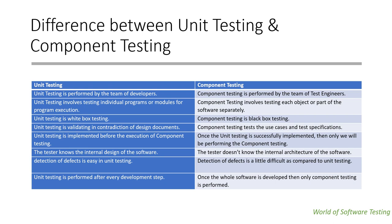Unit testing is implemented before the execution of component testing. If you remember the V-model diagrammatic representation, you can see that unit testing comes first, and once unit testing is successfully implemented, only then will we be able to perform component testing as a test engineer.